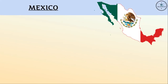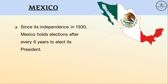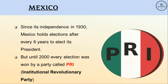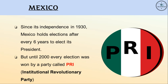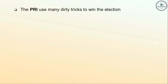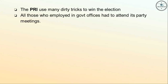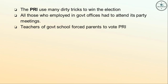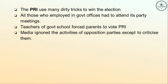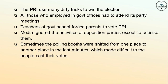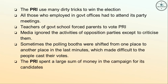Next, let's look at Mexico. Since its independence in 1930, Mexico holds elections every six years to elect its president. But until 2000, every election was won by a party called PRI — the Institutional Revolutionary Party. The PRI used many dirty tricks to win elections: government employees had to attend its party meetings, teachers forced parents to support PRI, media ignored opposition parties, polling booths were shifted at the last minute, and the PRI spent large sums of money on campaigns.